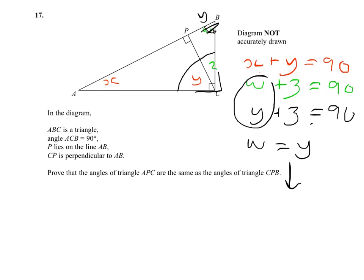This means that Z must therefore equal X. And that proves that the angles in triangle APC are the same as those in triangle CPB.